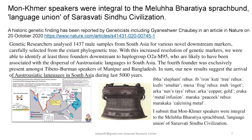With this increased resolution of genetic markers, the researchers were able to identify at least three founder streams to haplogroup O2A-M95, which are likely to have been associated with the dispersal of Austro-Asiatic languages in South Asia. The fourth founder was exclusively present amongst the Tibeto-Burman speakers of Manipur and Bangladesh. In summary, the research suggests that the arrival of Austro-Asiatic languages in South Asia occurred during the last 5,000 years. This remarkable genetic finding finds its corroboration in Induscript documentation.